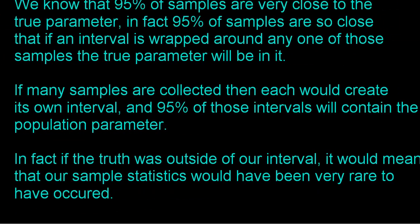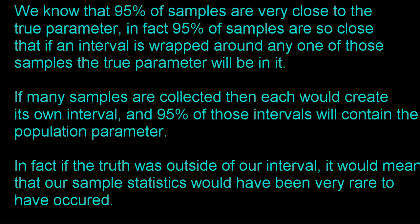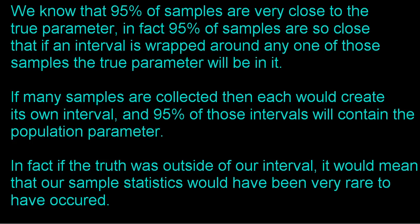So here's a couple different ways you could talk about what 95% confident means. We know that 95% of samples are very close to the true parameter, whether that be a mean or a proportion. In fact, 95% of samples are so close that if an interval is wrapped around any one of these samples, the true parameter will be in it. Another way you could look at this is if many samples are collected, then each would create its own interval. And 95% of those intervals will contain the population parameter, whether that be a mean or a proportion. And a third way of looking at this is saying, if in fact the truth was outside of our interval, it would only mean that our sample statistics would have been very, very rare to have occurred.